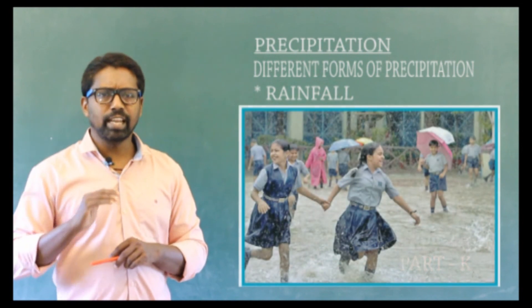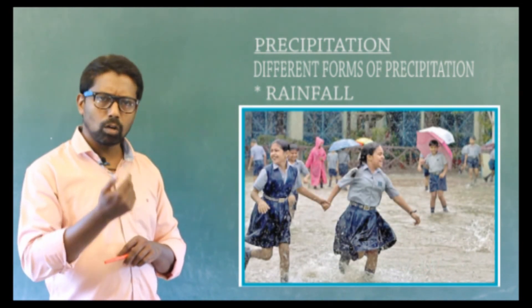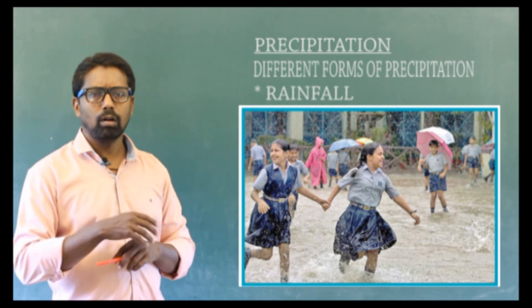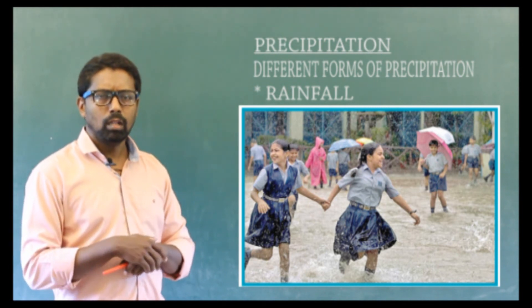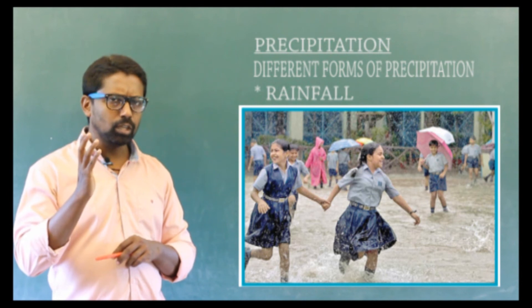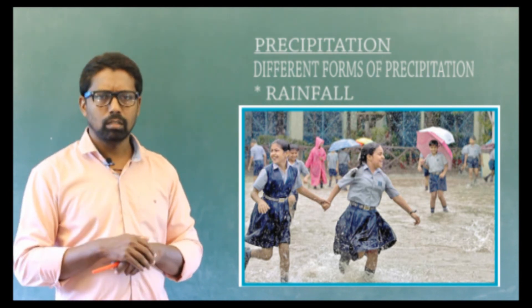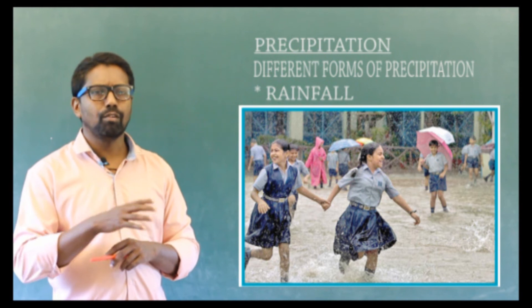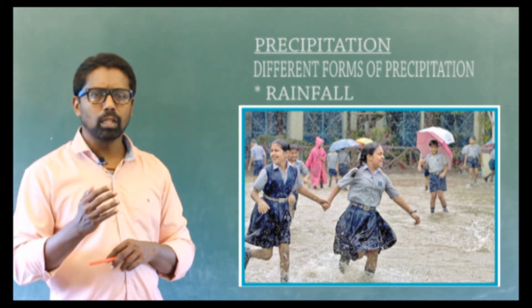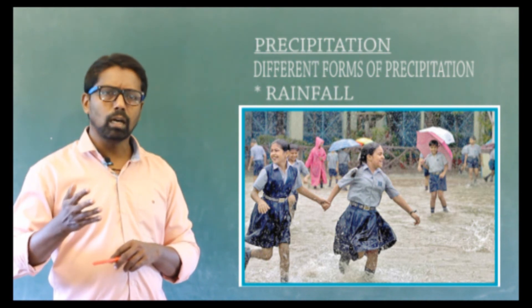The common manifestation of precipitation is in the form of water drops. This is called rainfall.